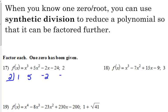1, 5, negative 2, negative 24. Bring down the 1. 1 times 2 is 2. Add. 5 plus 2 is 7. 7 times 2 is 14. Add. Negative 2 plus 14 is 12.